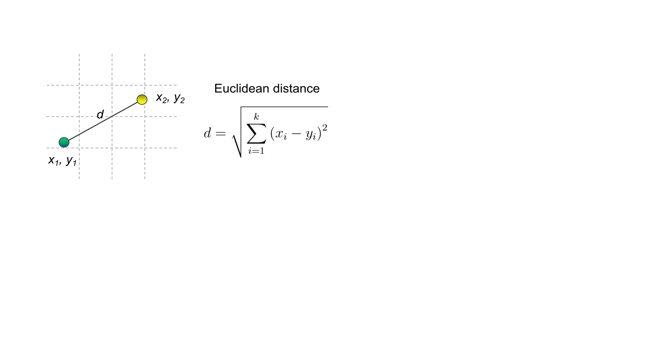Euclidean distance is the most common distance measure in machine learning. Many machine learning algorithms use distance measures between feature vectors at their core.